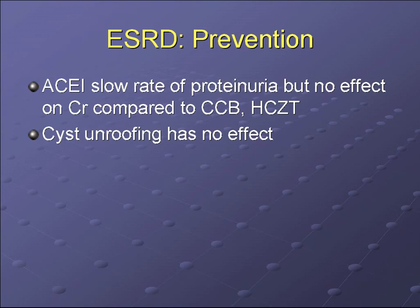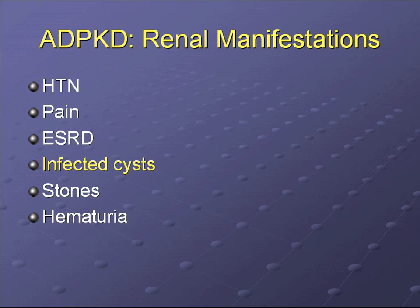As for preventing ESRD, ACE inhibitors have not been shown to decrease the rate of renal decline, though they slow the rate of proteinuria. Cyst marsupialization also has no effect on renal function.